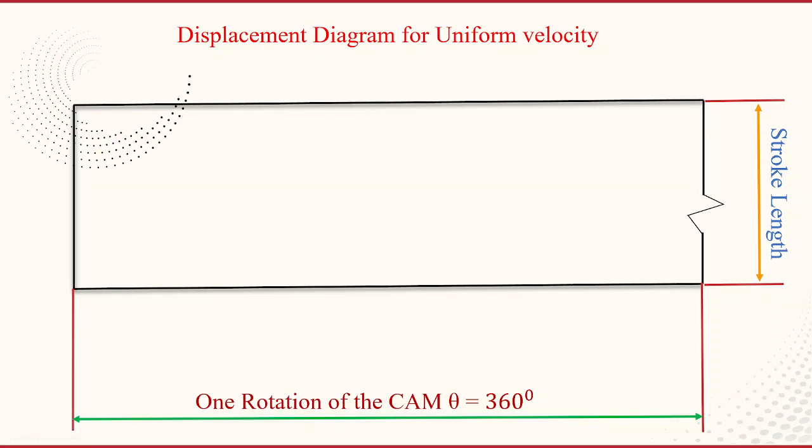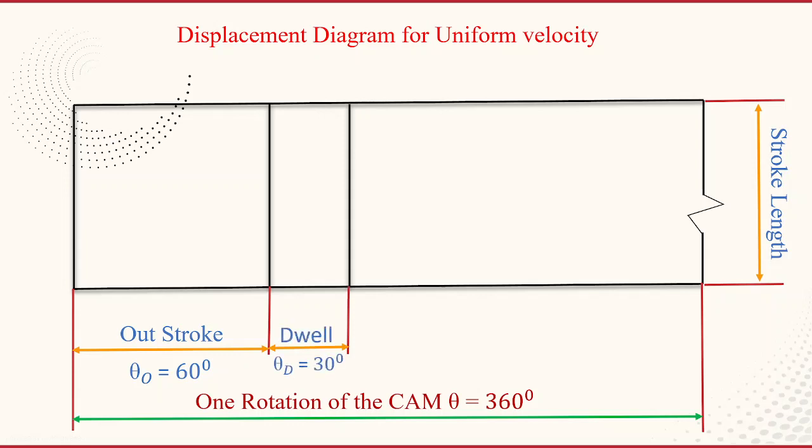Now this entire length of the rectangle is divided into whatever the sequence of operations are carried out as per the given problem. So first it will take the outstroke. This outstroke is happening in 60 degrees of rotation of the cam. Then followed by dwell, and this dwell is next 30 degrees.